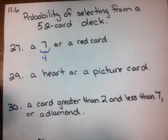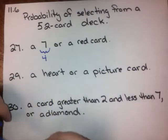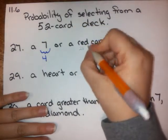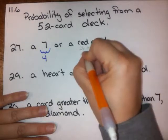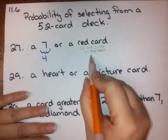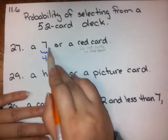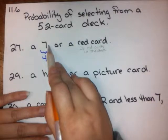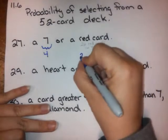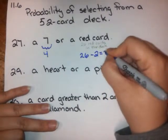How many red cards are there in the deck? Well, there are 13 hearts and 13 diamonds, so that's 26 red cards in the deck. But we've already counted 2 of them, because 2 of these 7s are red — there's a 7 of hearts and a 7 of diamonds included in the 4 we counted. So we need 26 minus 2, which gives us 24.